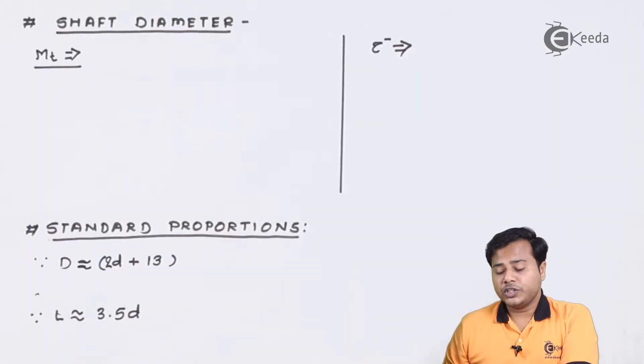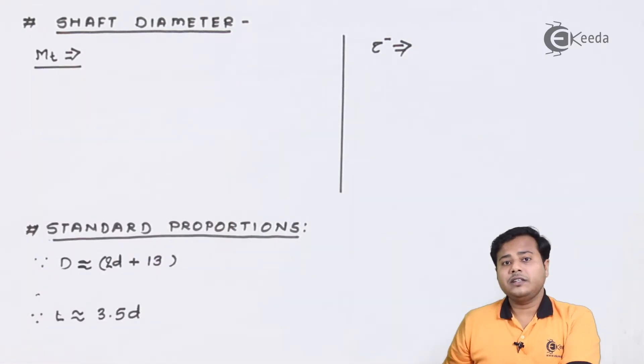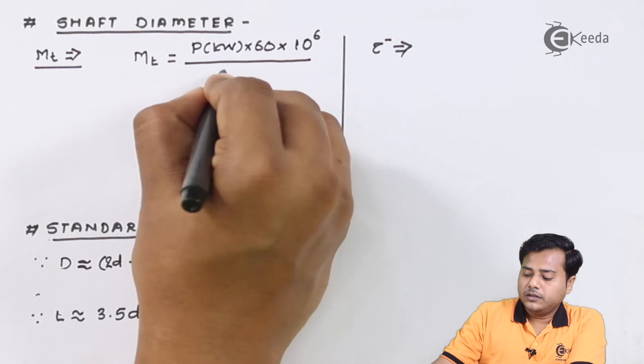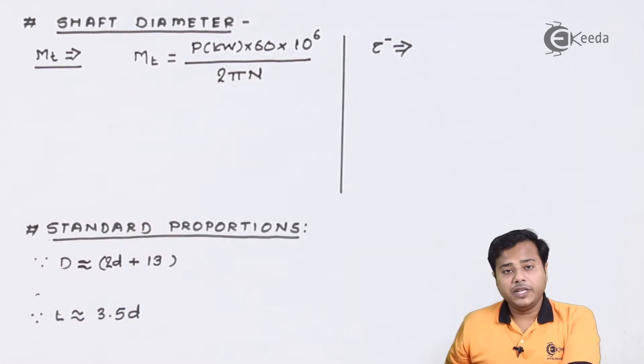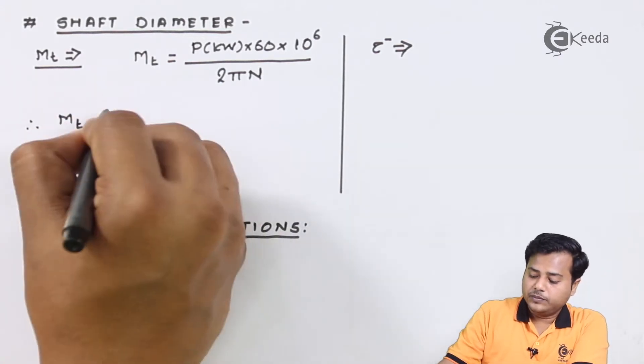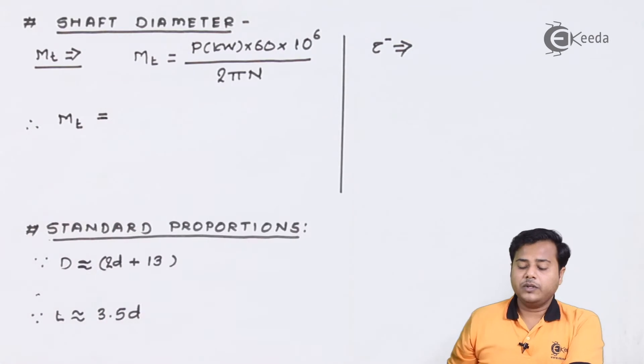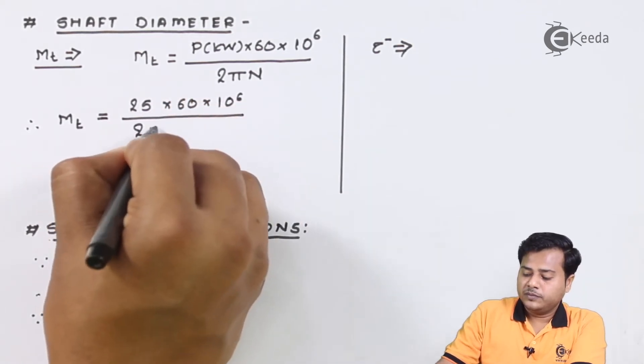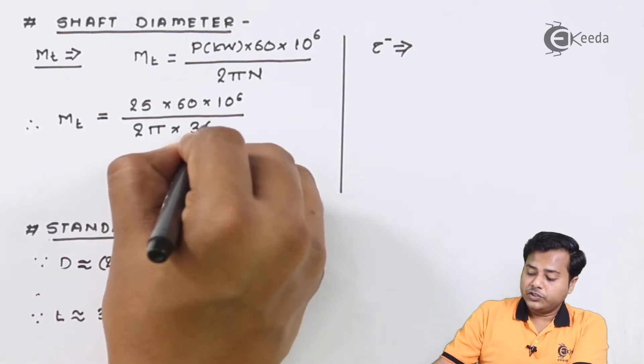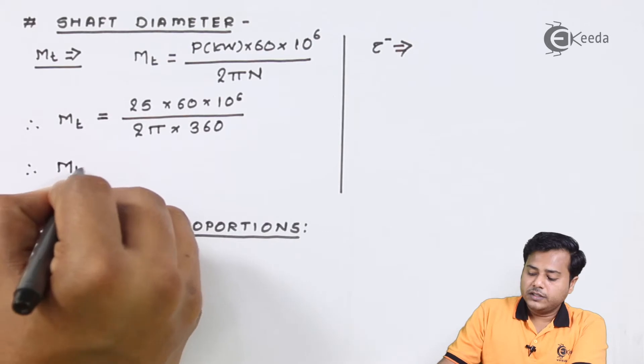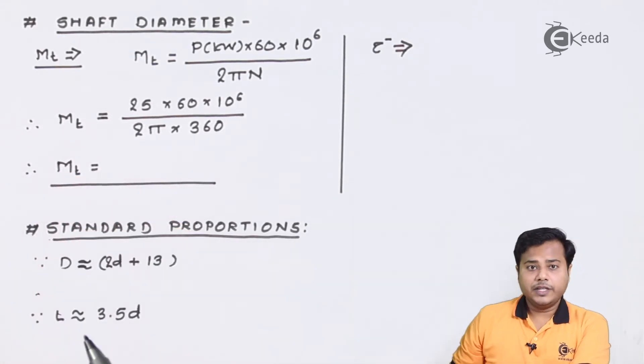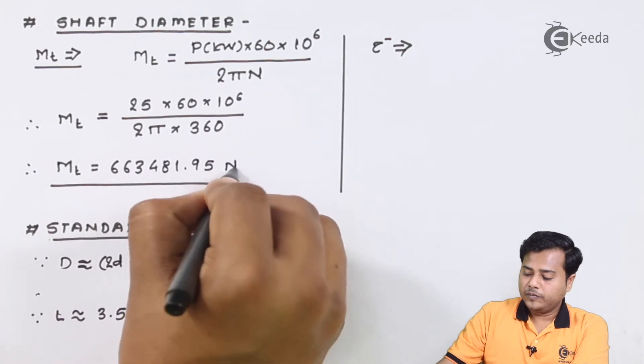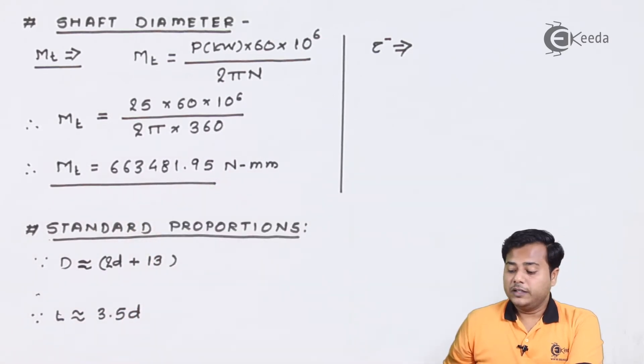Let us begin with the shaft. We know that the torque or resisting torque is equal to power in kilowatt times 60 times 10⁵ divided by 2πN. The power to be transmitted is 25 kilowatt and the RPM is 360. After solving this expression, we get the torque Mt equals 663481.95 N-mm.